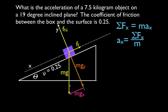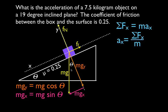The x component is drawn parallel to the x axis. We have a right triangle — we know this angle is 19 degrees, and by similar triangles this angle is also 19 degrees. We use trig to solve for x and y components of the weight. The y component is adjacent to the angle, so we use cosine: mgy equals mg cosine theta. The x component is opposite the angle, so we use sine: mgx equals mg sine theta.